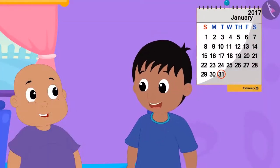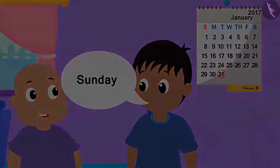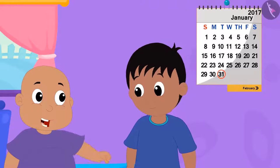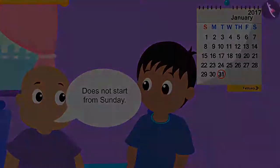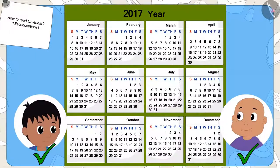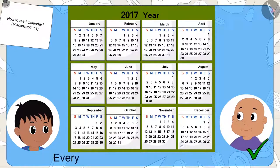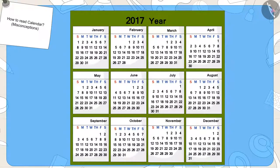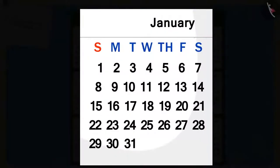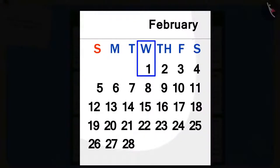Raju is telling Bablu that tomorrow is the first date of February, so tomorrow will definitely be Sunday. Bablu started laughing at Raju. Bablu said that every month does not necessarily start on Sunday. Children, who do you think is right — Raju or Bablu? Yes, Bablu is right. Every month does not start on Sunday. As you can see in this calendar, the first date of January is on Sunday, but the first date of February is on Wednesday.